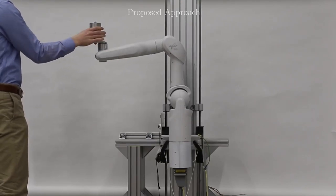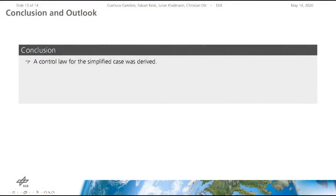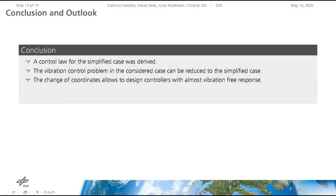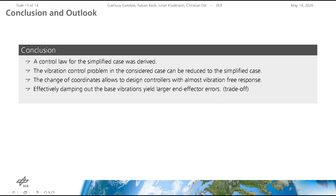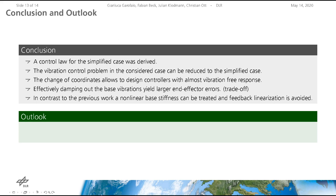This is the end of the presentation. A controller for the simplified case was derived and the vibration control problem in the considered case can be reduced to the simplified one. The change of coordinates allows to design controllers with almost vibration-free response. Effectively damping out the base vibrations yields larger end effector errors; therefore, in the gain selection there is a tradeoff between end effector tracking and base vibration damping. In contrast to previous work, a nonlinear base stiffness can be treated and feedback linearization is avoided. Future work will consider observer design for the momentum or base dynamics instead of measurements, and the extension to the rotational case.